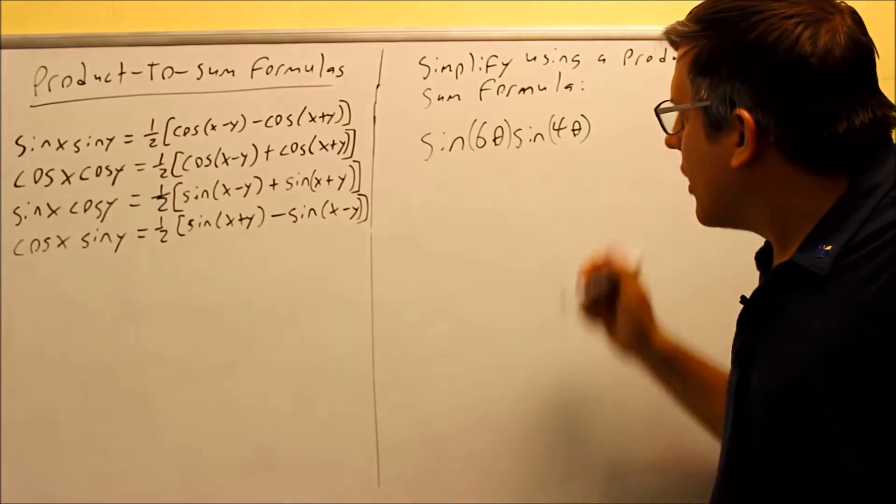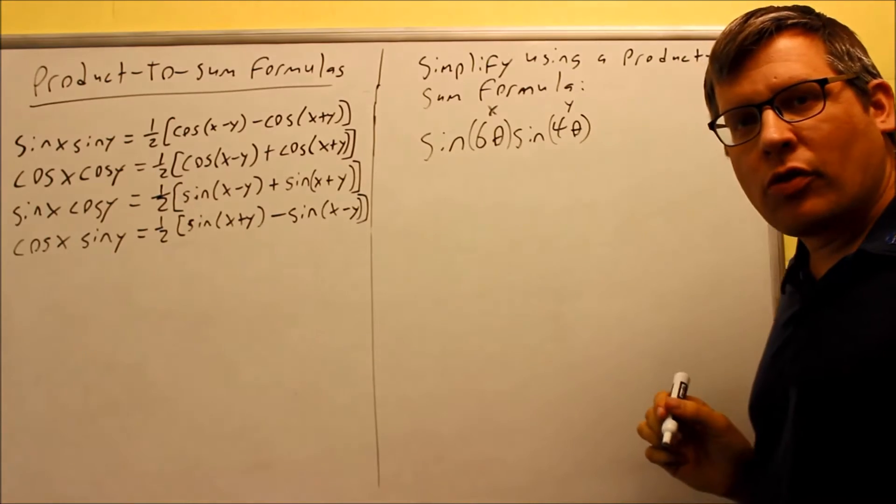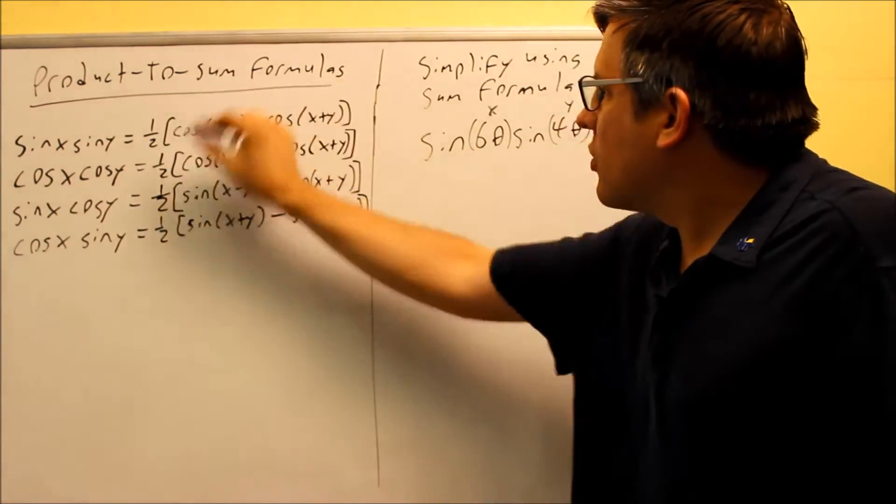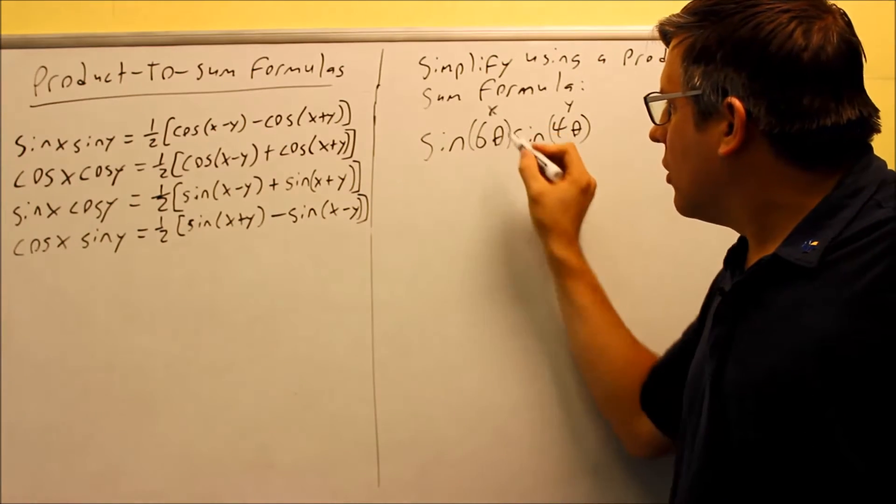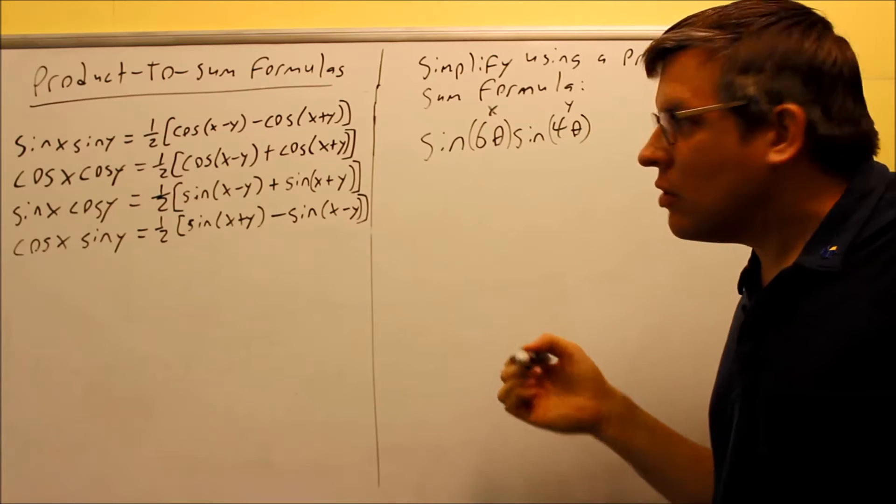We have a sine x and a sine y. So therefore, my x is 6 theta and my y is going to be 4 theta. All I'm going to do is rewrite it by using the right-hand side of the formula. I'm going to put 6 theta in for x and 4 theta in for y. And that's really all you have to do on this.